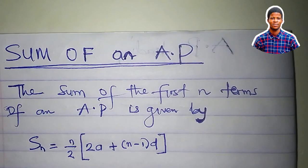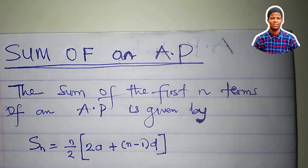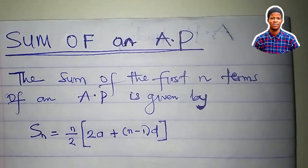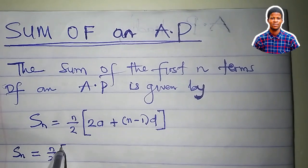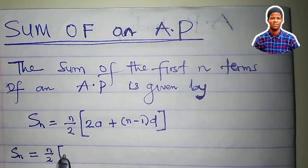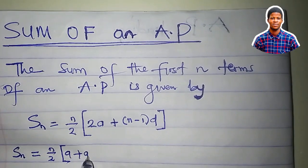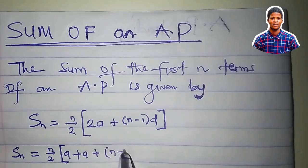Now, I want to reduce this formula to something else. S_n equals n over 2. 2a is the same thing as a plus a, then plus (n-1)d.